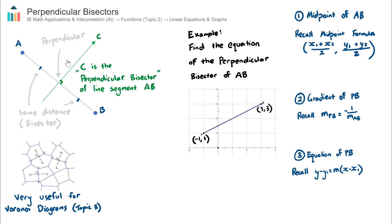Let's consider this diagram here in the top left. We have a line segment from A to B — that's this dashed blue line segment here. The perpendicular bisector of this blue line segment is this green line C. The green line cuts through the line segment at a right angle — that's why we call it perpendicular — making a cross. The word bisector means that it cuts through it exactly halfway between points A and B. The little tick marks represent that the distance from A to the midpoint C is equal to the distance from C to B.